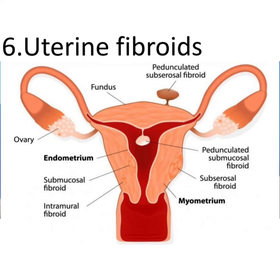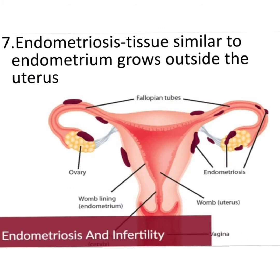Similarly, endometriosis. What is endometriosis? It is a tissue similar to the endometrium that grows outside the uterus. It can be in the ovary, affecting the release of the ovum; in the fallopian tube, causing blockage; or outside the endometrial area, causing thickening of the uterus. All these problems can lead to infertility.